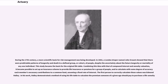During the 17th century, a more scientific basis for risk management was being developed. In 1662, a London draper named John Graunt showed that there were predictable patterns of longevity and death in a defined group, or cohort, of people, despite the uncertainty about the future longevity or mortality of any one individual. This study became the basis for the original life table. Combining this idea with that of compound interest and annuity valuation, it became possible to set up an insurance scheme to provide life insurance or pensions for a group of people, and to calculate with some degree of accuracy each member's necessary contributions to a common fund, assuming a fixed rate of interest. The first person to correctly calculate these values was Edmund Halley.